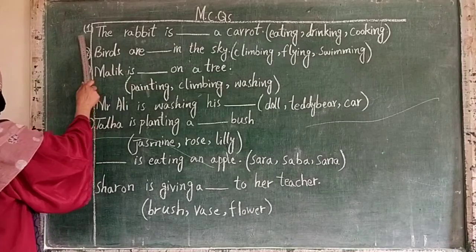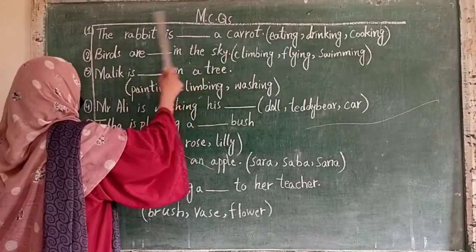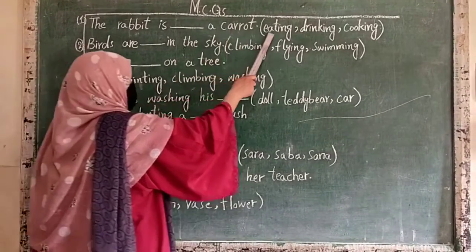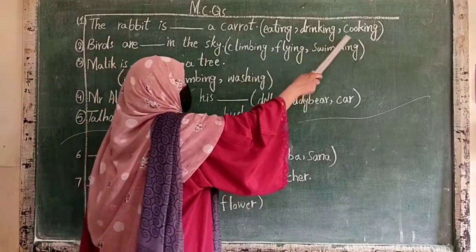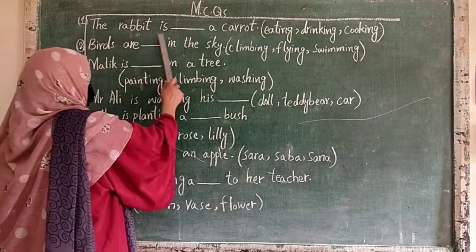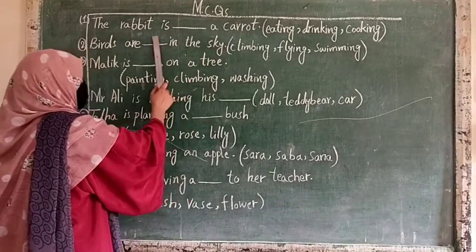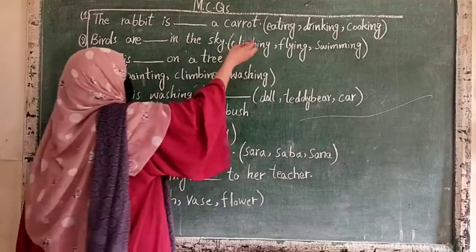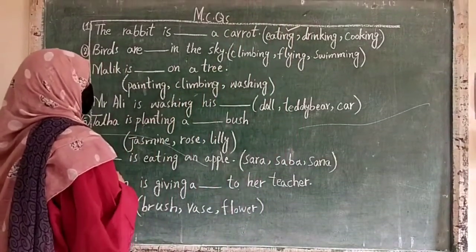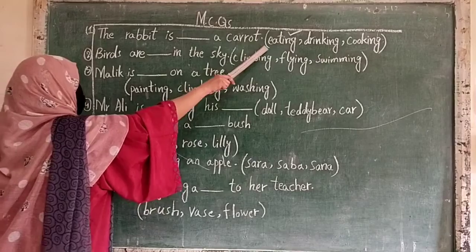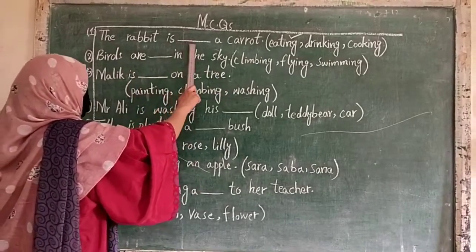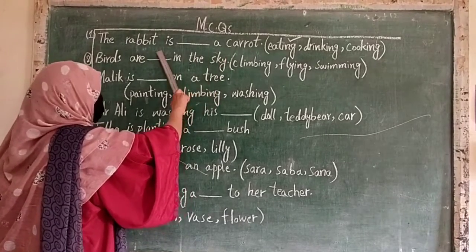Number 1: the rabbit is ___ a carrot. Options are: eating, drinking, or cooking? The right option is eating. The rabbit is eating a carrot.